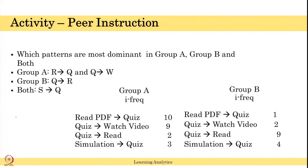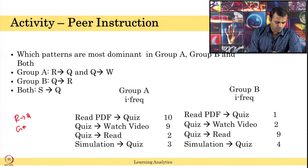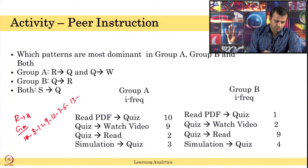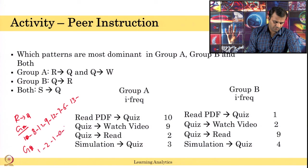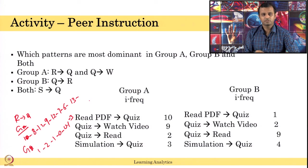Let us say this. For the Read to Quiz, for Group A, it occurred 10, 8, 11, 9, 12, 7, 6, 13 - it occurred in this kind of sequence. And for Group B, it occurred in something like this.